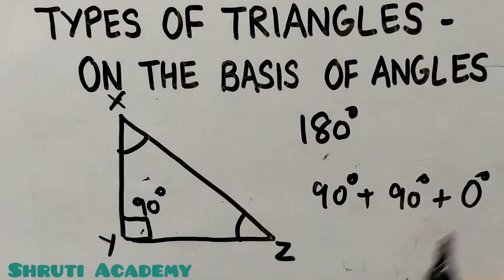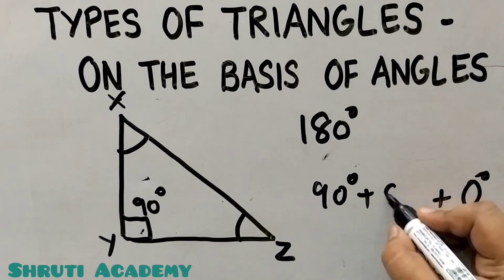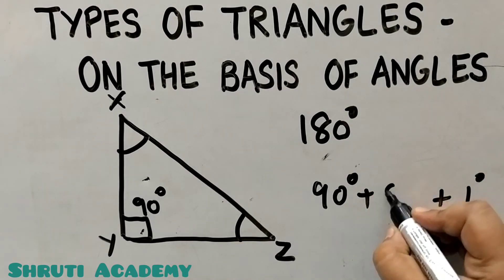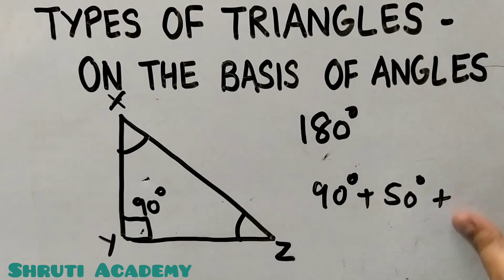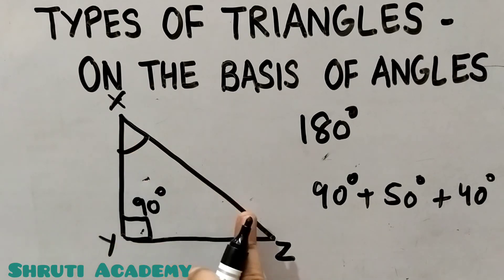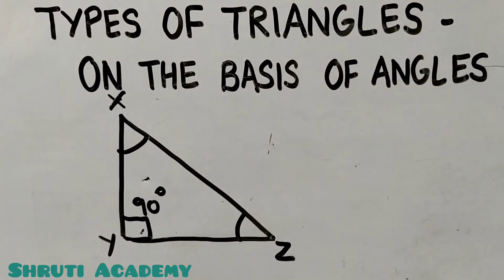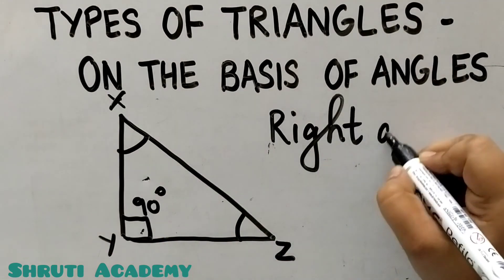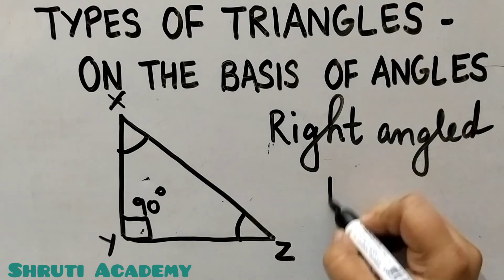The other two angles will be less than 90 degrees. For example, if one angle is 89 degrees, the other is 1 degree. Or if one is 50 degrees, then 90 plus 50 is 140, and 180 minus 140 is 40 degrees. So a right angle triangle has one right angle and the other two are acute angles. Any triangle that has one angle equal to 90 degrees is called a Right Angle Triangle.